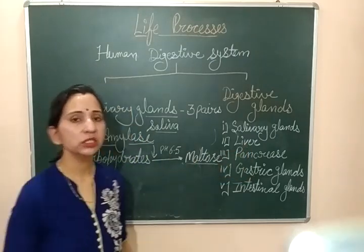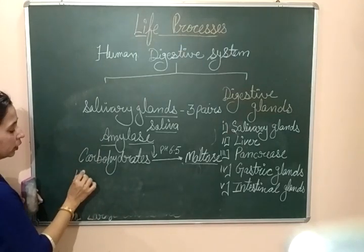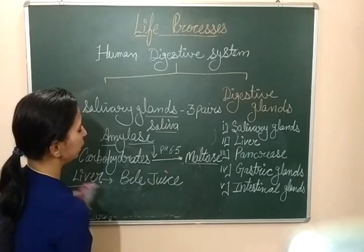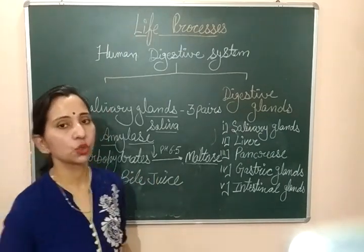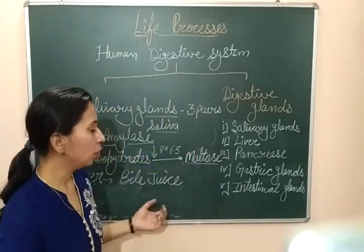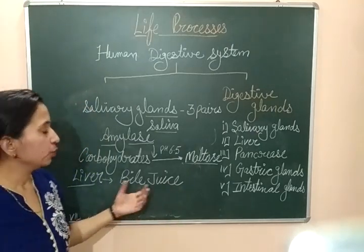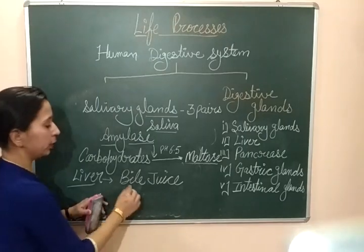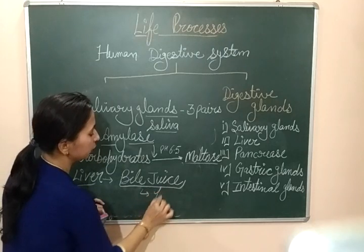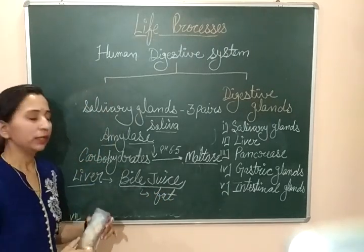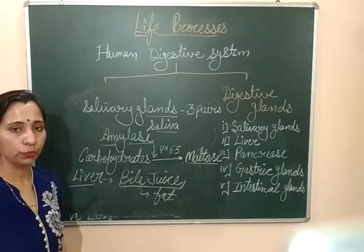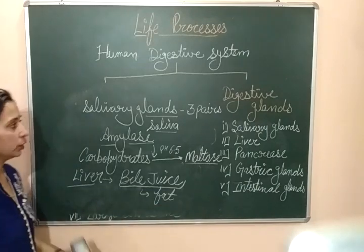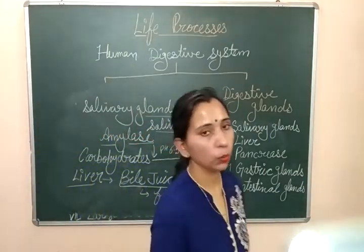The next digestive gland is the liver. The liver is the largest gland of the body. The liver secretes bile juice. This bile juice gets stored inside a sac-like structure called the gallbladder. When the digestion process starts in the intestine, bile is released and helps in the digestion of fat. Bile juice does not directly digest fat but performs a process known as emulsification.